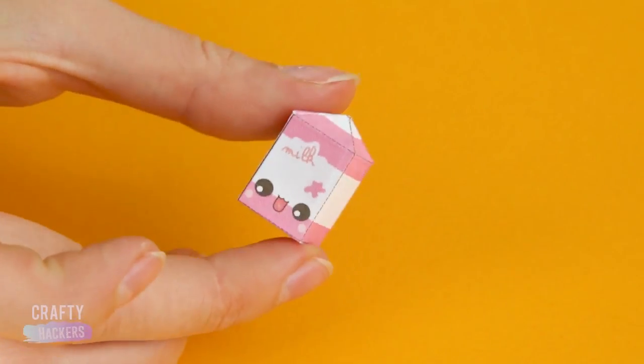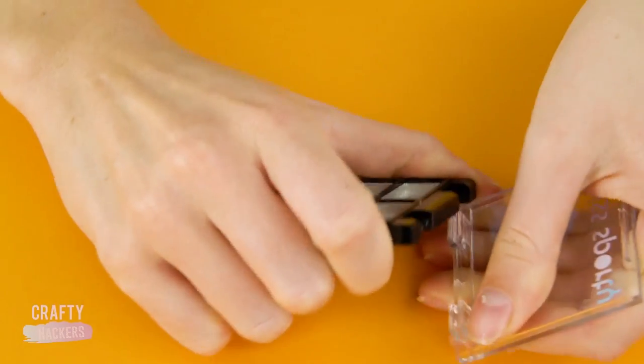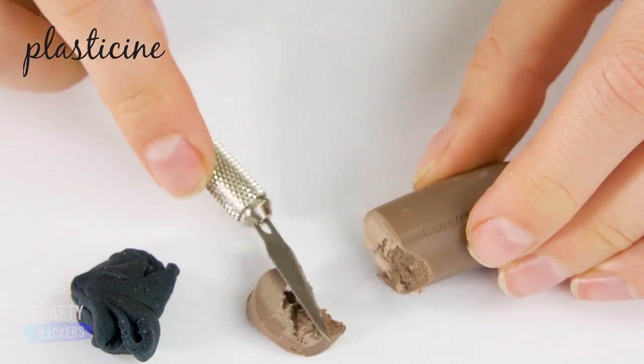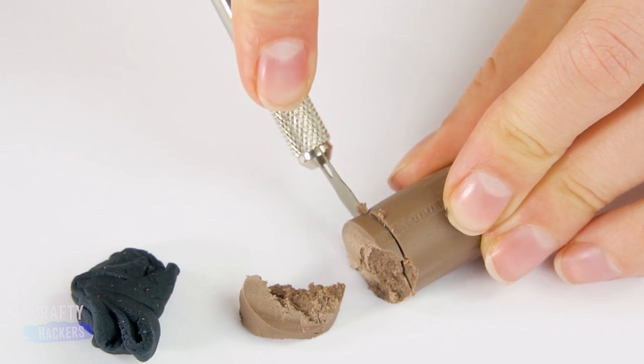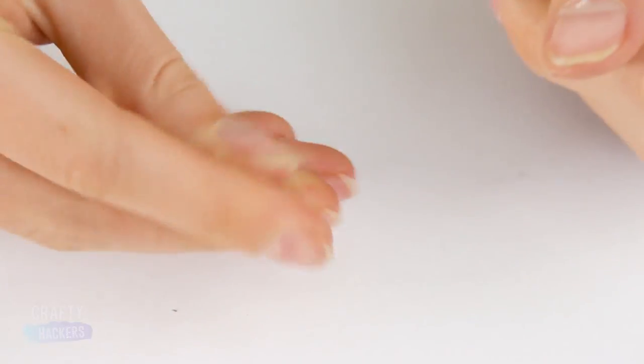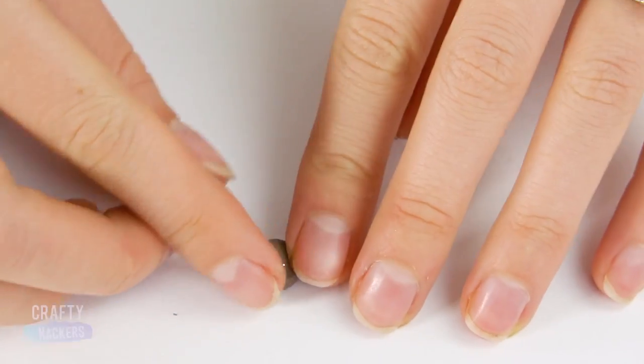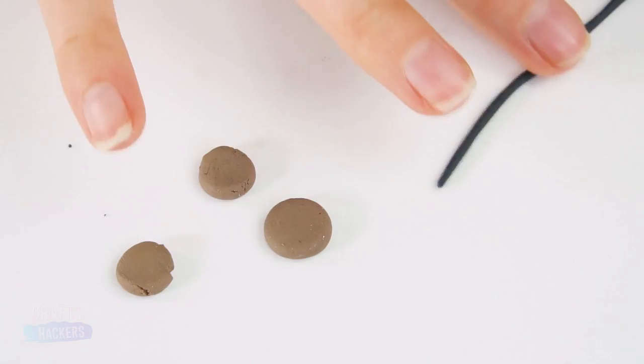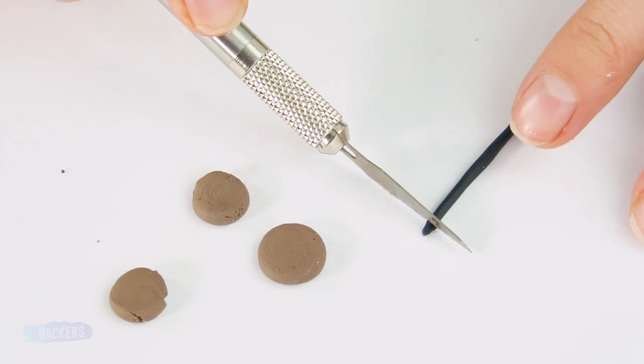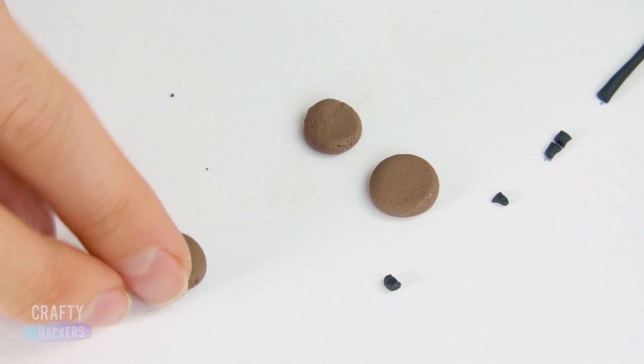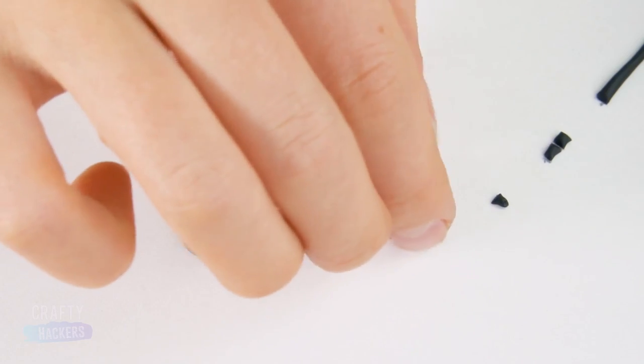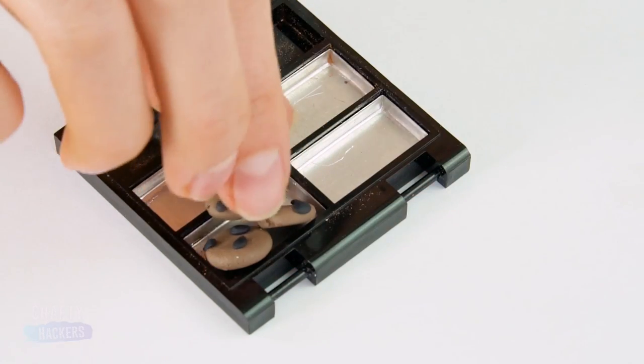Cute, right? Next, clean out an old makeup compact. Pop the lid off so it looks like a lunch tray. Time to make some food out of this plasticine material. Cut a few pieces off and roll them up between your fingers. Flatten these little guys out. And roll out a long skinny piece of black plasticine. Cut tiny chocolate chips for your cookies and put them on. Place these treats on Barbie's lunch tray.